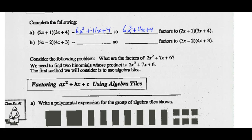If I expand 3X minus 2 times 4X plus 3: 3X times 4X is 12X squared. 3X times 3X is 9X, and negative 2 times 4X is minus 8X. 9X minus 8X is plus X, and negative 2 times 3 is minus 6. So, 12X squared plus X minus 6 factors to be 3X minus 2 times 4X plus 3.